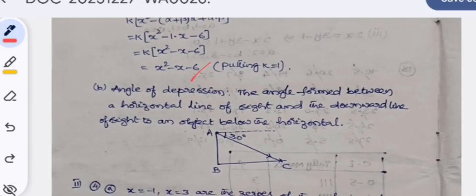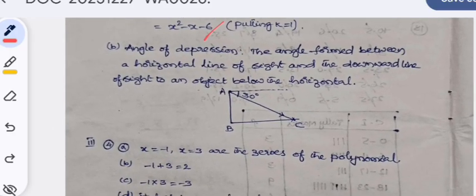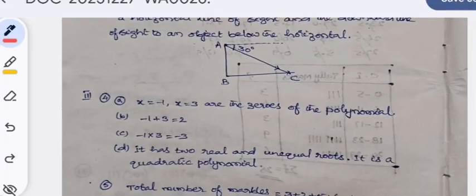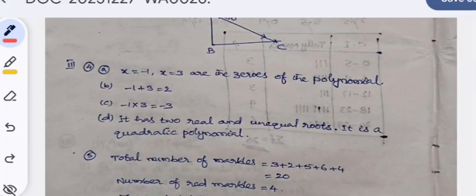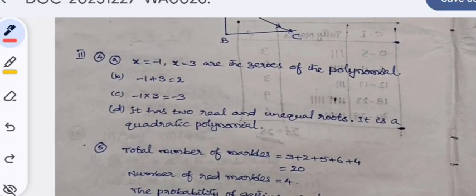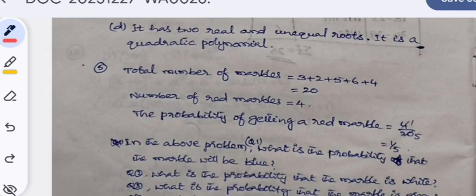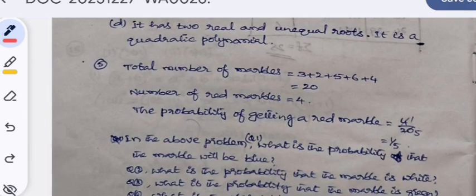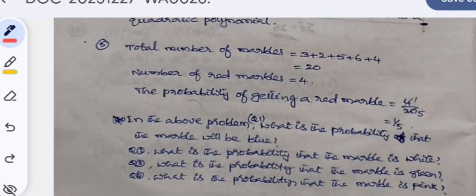Fourth question: as I have already given the answers while explaining the question paper, the same answers are written here. Fifth question: the total number of marbles is equal to 20. Number of red marbles is 4. The probability of getting a red marble is 4/20, that is 1/5.